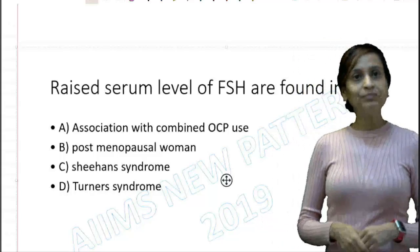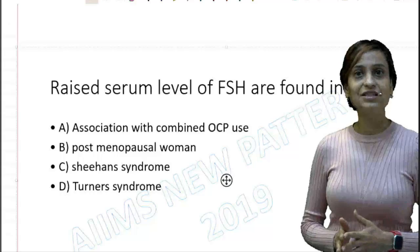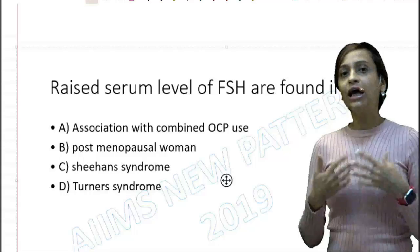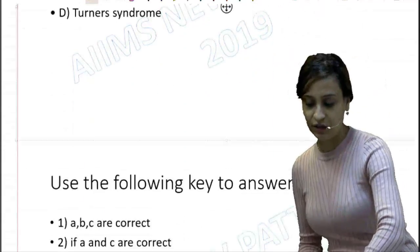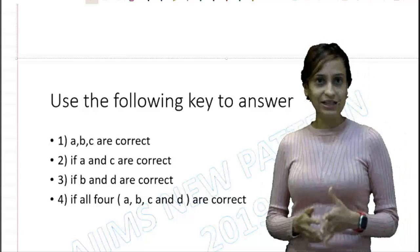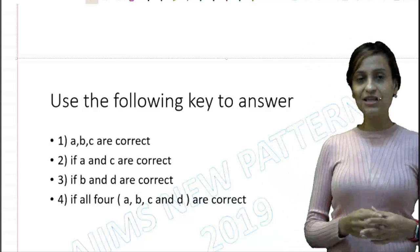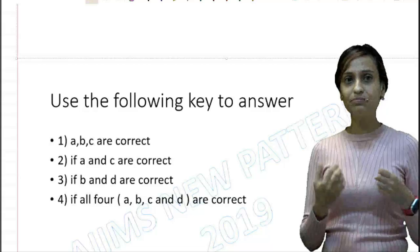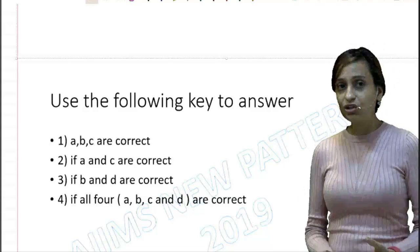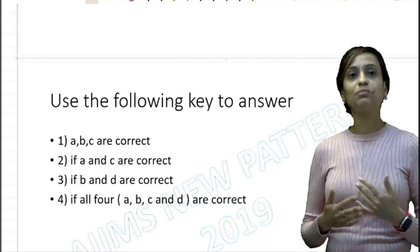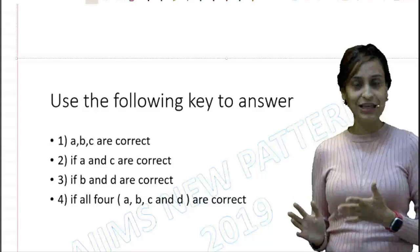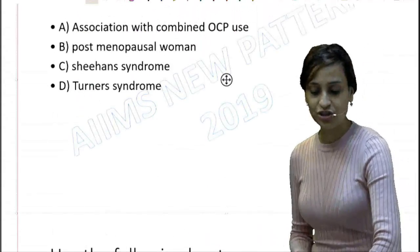The question says: raised serum levels of FSH are found in. You would be given four choices with the question, and based on the choices you are given a key to answer. The key goes like this: option 1 says A, B and C are correct; option 2 says A and C are correct; option 3 says B and D are correct; and option 4 says all four are correct. They are going to use this key and the question is going to be different.